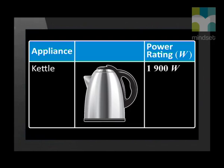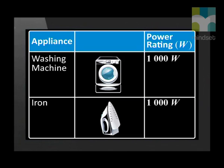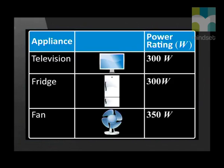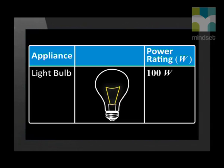To understand how much electrical energy we use in our homes, let us look at the power ratings of a number of different appliances. Remember that the higher the power rating, the more energy the appliance uses per unit time. The power rating of most household appliances is given underneath the appliance. Here we have a kettle with a power rating of 1900 watts. This washing machine has a power rating of 1000 watts, as does the iron. Televisions, fridges, and fans each use between 300 and 350 watts. The average light bulb used in households is rated at 100 watts.